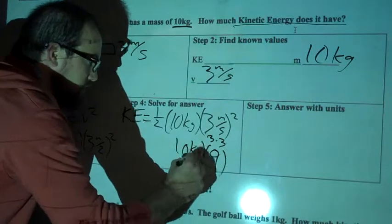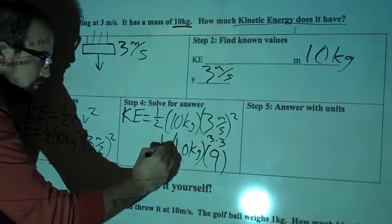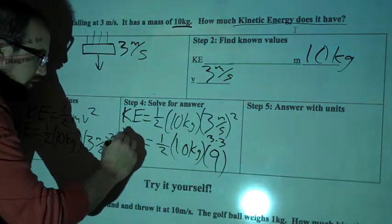10 kilograms, also in parentheses, and 1 half, also, and then KE.